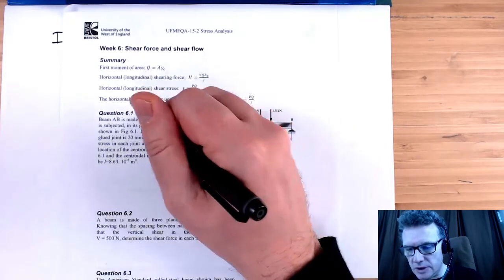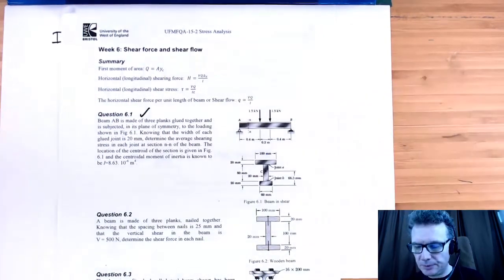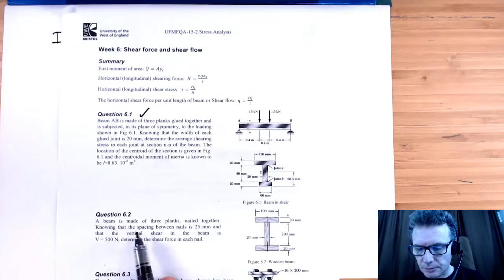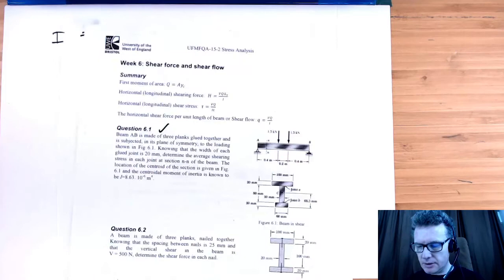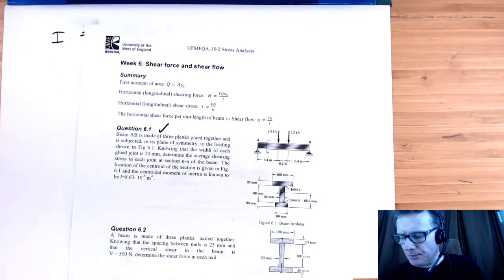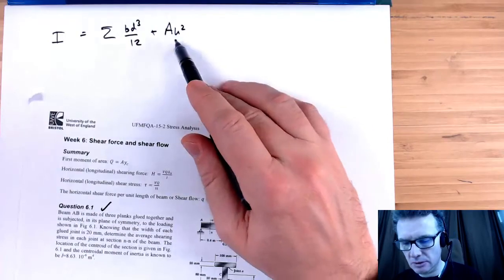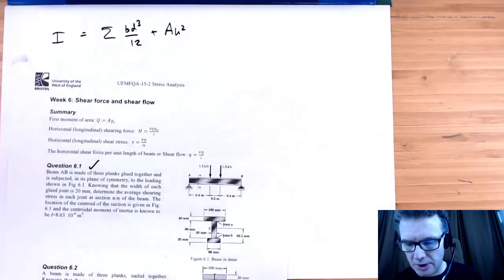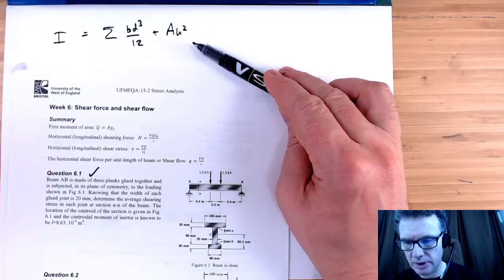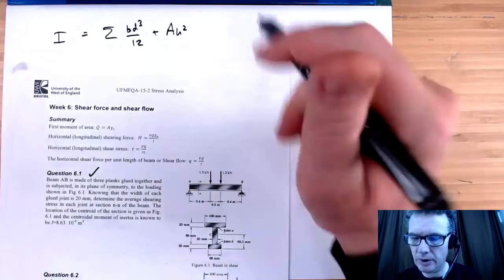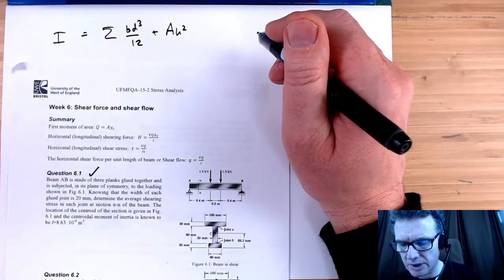Okay, so 6.1 done with no problems. 6.2 looks very similar, actually looks easier. It's a metric I-beam. What I don't have though is the second moment of area, so I need that. It's saying the spacing between the nails is 25 millimeters.